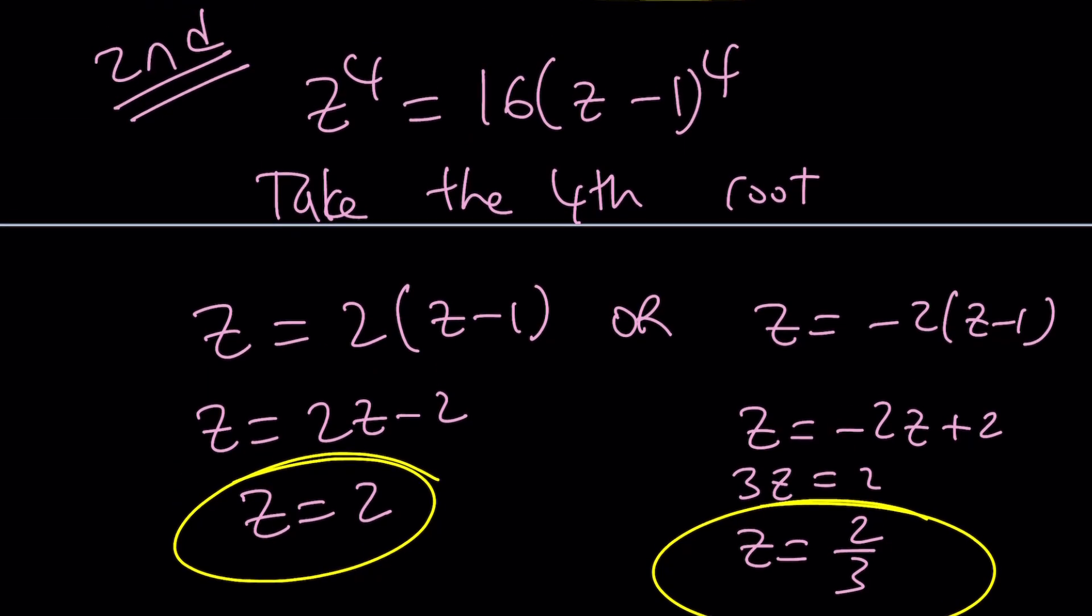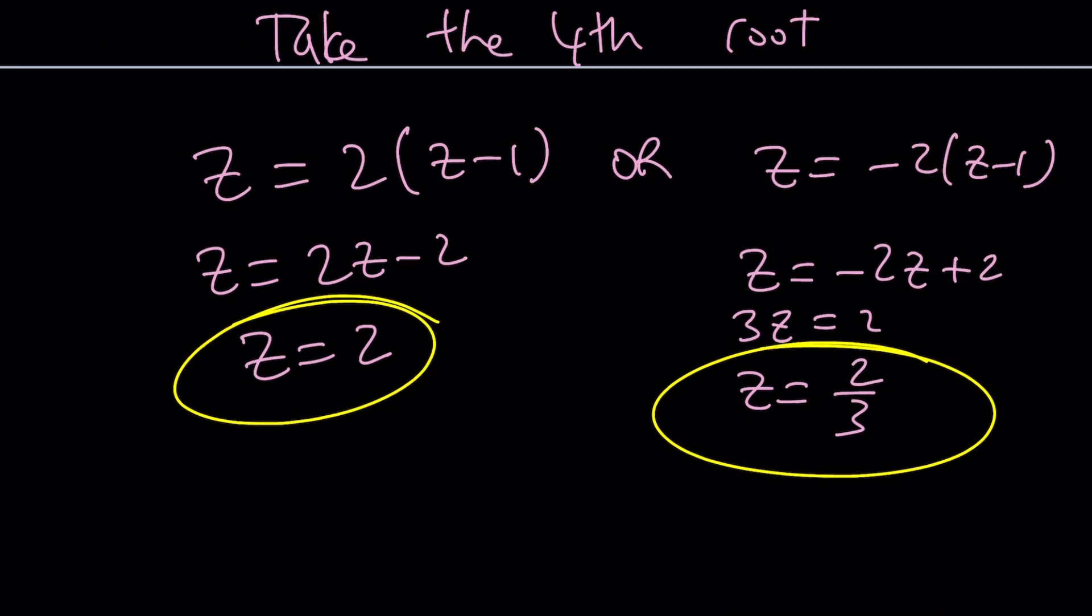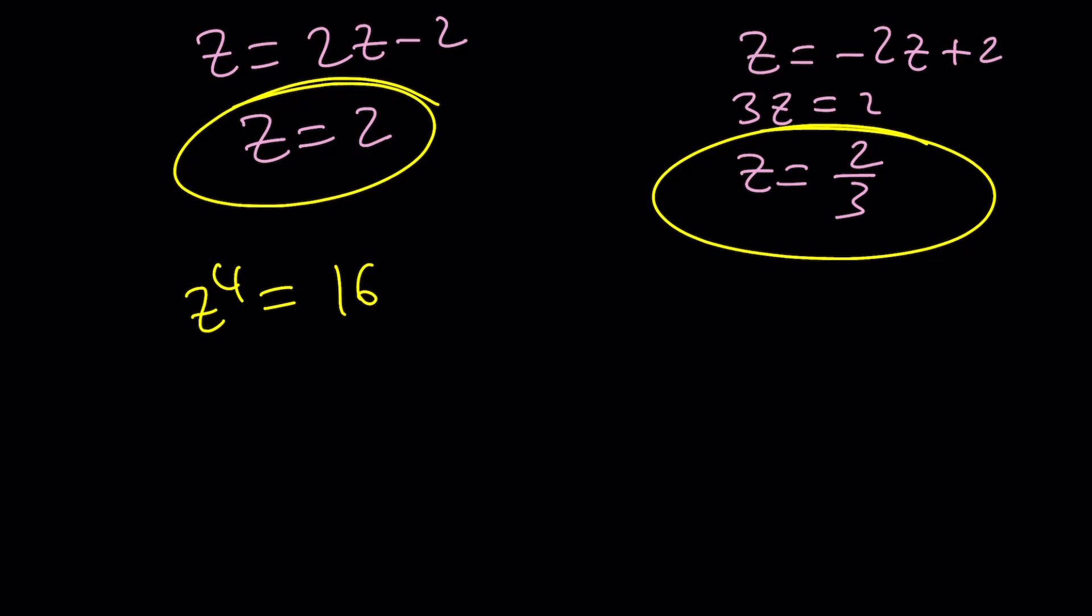Where do the complex solutions come from? That's a good question. So here's what you can do. Z to the fourth power can actually be written as I times Z to the fourth power. Or we can do the same thing on the right-hand side. So take a look. Since I to the fourth power is equal to 1, because I squared is negative 1, we can go ahead and write this as Z to the fourth power equals 2 times Z minus 1 times I times that expression to the fourth power.